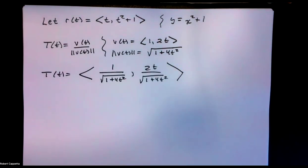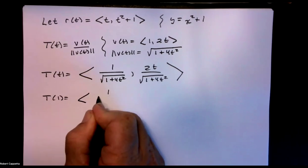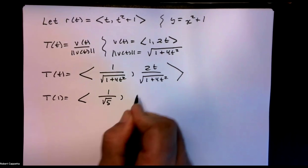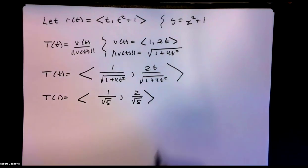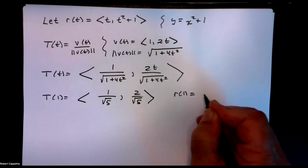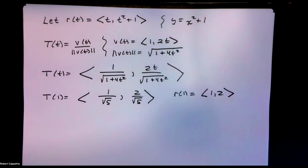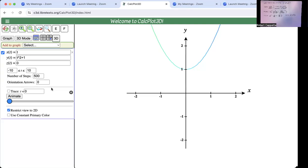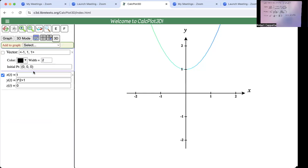Let's see if we can visualize this. T(1) would be ⟨1 over root 5, 2 over root 5⟩. And where is it located? r(1) is ⟨1, 2⟩. So let's go ahead and add that vector to see if it looks like the unit tangent vector. I'm going to add a vector of the form ⟨1/√5, 2/√5, 0⟩.